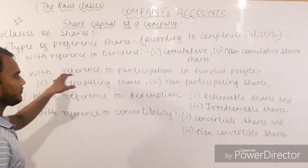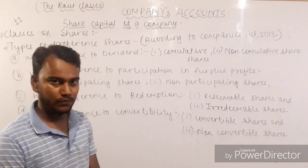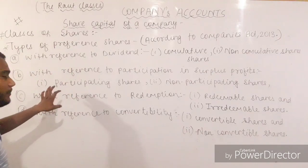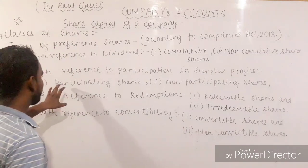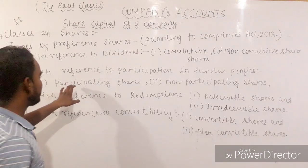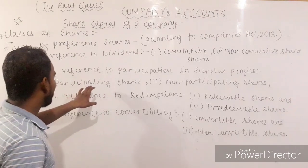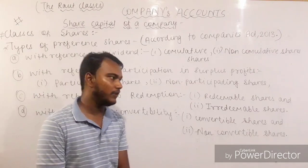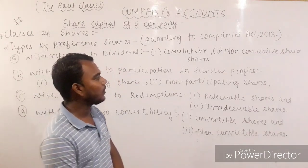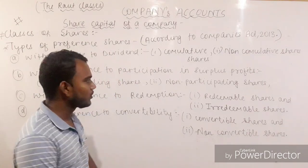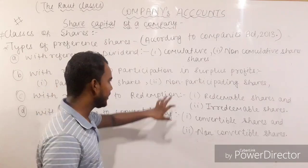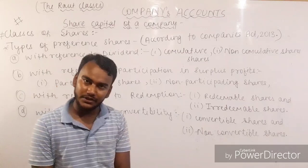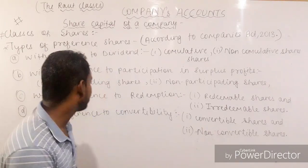The second classification is with reference to participation in surplus profit. In this respect, preference shares can be divided into two parts: the first category is participating preference shares, which participate in the surplus profits of the company, whereas the other type — non-participating preference shares — are not given a share in the surplus that a company earns.